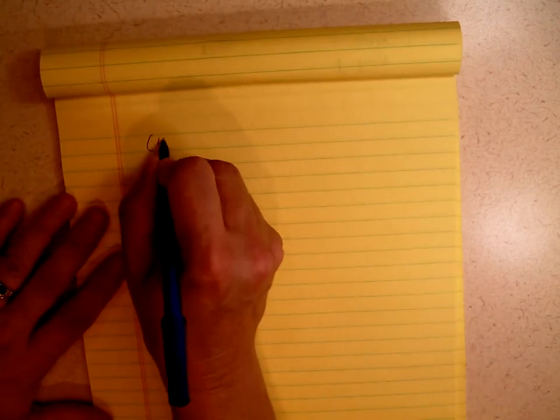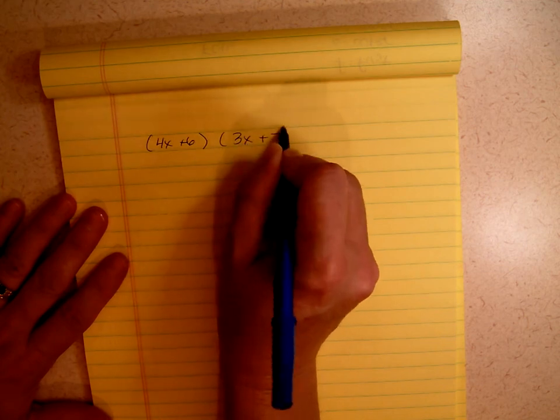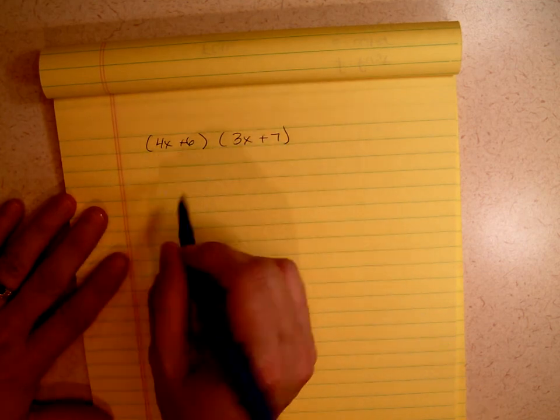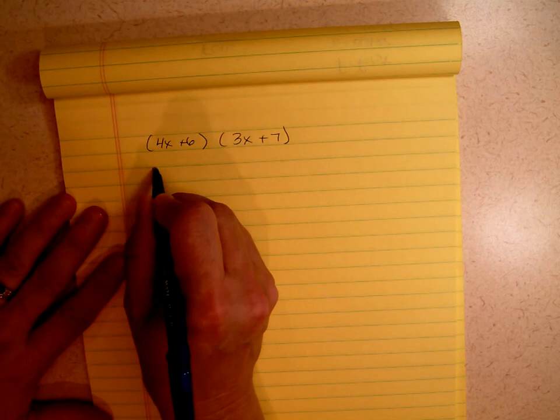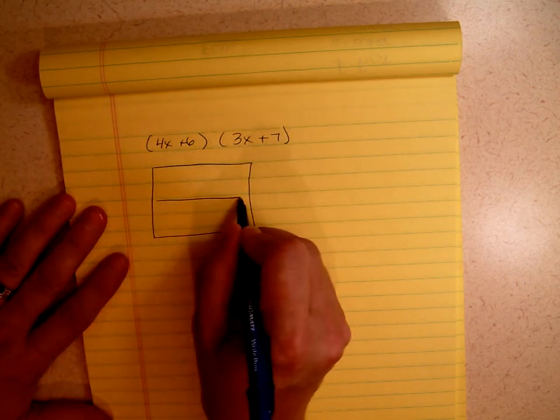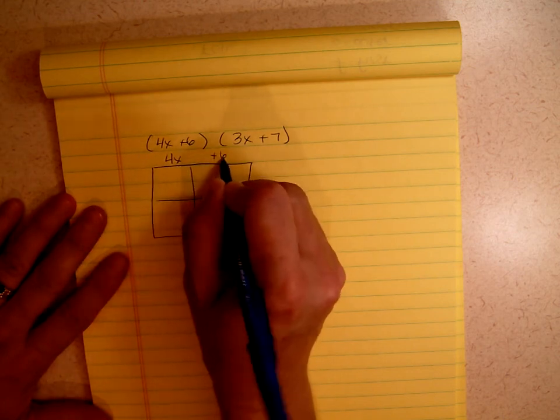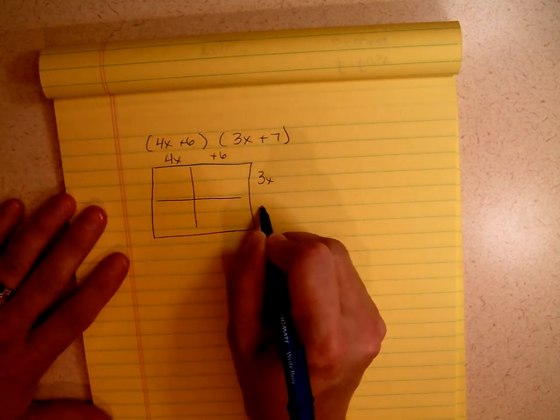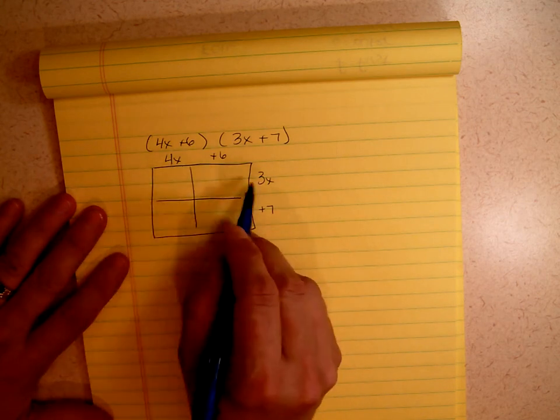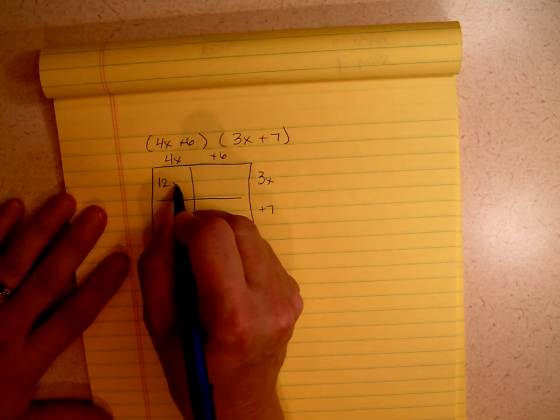Let's try a couple more practice problems. 4x plus 6 times 3x plus 7. Again, it's a 2 by 2 matrix. Can you do them bigger than 2 by 2? Absolutely. I'm going to do one of those next. 4x plus 6, 3x plus 7. 4 times 3 is 12, and x times x is x squared.